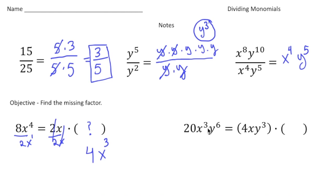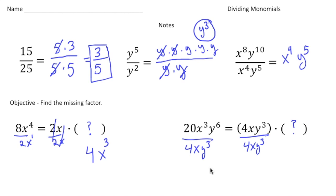Over here we have 20x cubed y to the sixth equals 4xy cubed times the unknown. Divide both sides by 4xy cubed: 20 divided by 4 is 5, x cubed divided by x is x squared, and y to the sixth divided by y to the third is y cubed. And there's our missing factor.